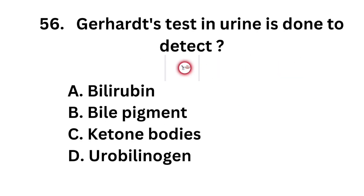Question number 56. Gerhardt's test in urine is done to detect: Option A: Bilirubin. Option B: Bile pigment. Option C: Ketone bodies. Option D: Urobilinogen.